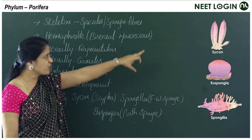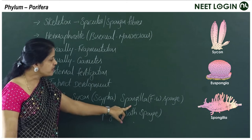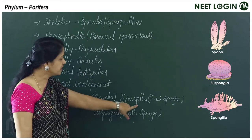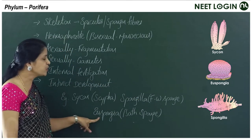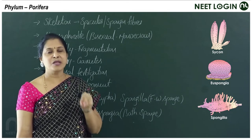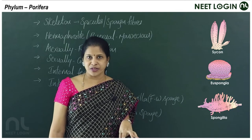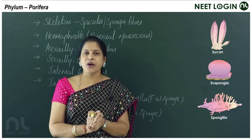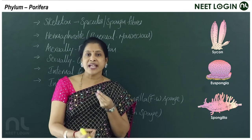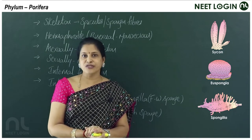Examples of poriferans include Sycon, Scypha, and Spongilla. Spongilla is a freshwater sponge — though the majority are marine, a few are freshwater. You need to learn examples and focus on key points: the type of fertilization, the type of development, and the unique features of the phylum. Comparing across phyla will make this chapter easier to memorize.